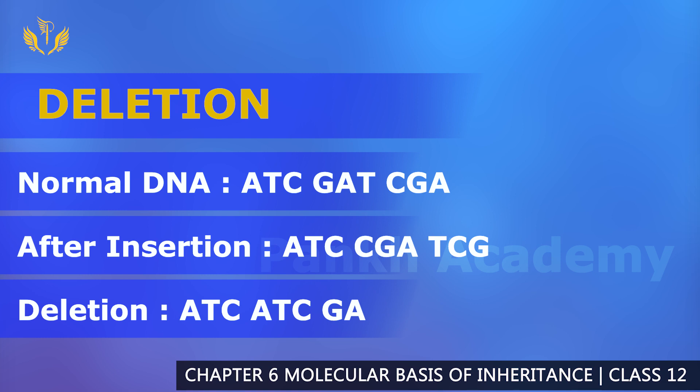Looking at the example: the normal DNA sequence is ATC-GAT-CGA. With insertion, a new nucleotide is added, shifting the reading frame. With deletion, a nucleotide is removed — for example, ATC becomes incomplete — and the reading frame shifts accordingly.